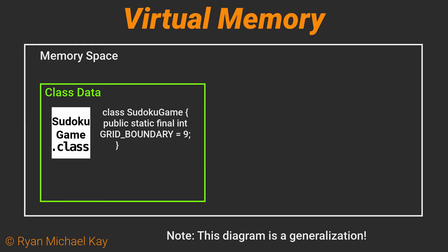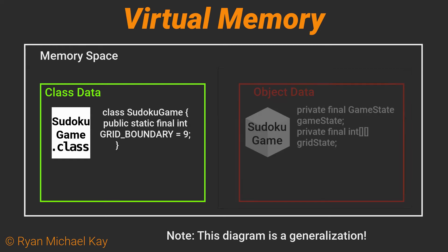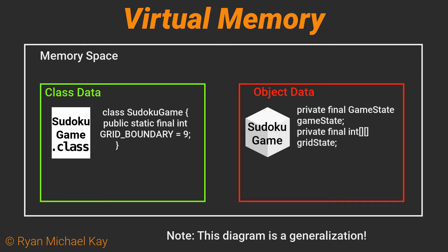Anytime the JVM needs to create an object, such as when we use the new keyword, it will look at the class data and use it to build an object in a different portion of memory space. The main idea you need to understand about the static keyword is that static variables are stored in the same space as the class data.